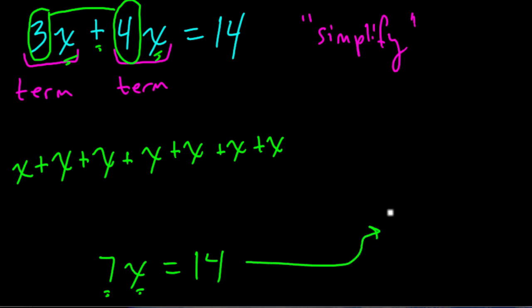7x equals 14. Well, let's divide both sides by 7. 14 divided by 7 is 2. 7x divided by 7 is just x. So x is going to equal 2.